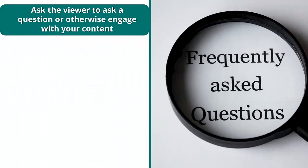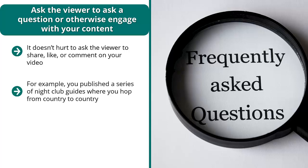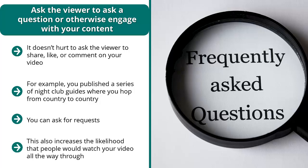Ask the viewer to ask a question or otherwise engage with your content. It doesn't hurt to ask the viewer to share, like, or comment on your video. One of the easiest ways to do this is to ask the viewer a question. For example, if you publish a series of nightclub guides hopping from country to country, at the end of your latest video you can ask: which nightclub, which city, and which country would you want me to go to next? You can ask for requests, comments, and feedback. When people engage with your content, YouTube tends to rank your video higher because engagement indicates that people are paying attention. This also increases the likelihood that people watch your video all the way through — and viewing duration plays a big role in how well your video ranks.